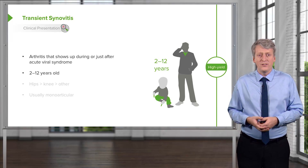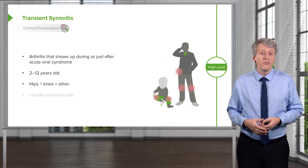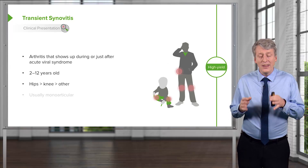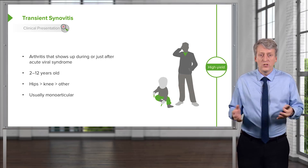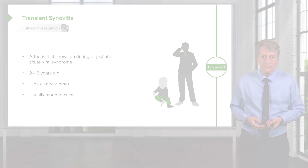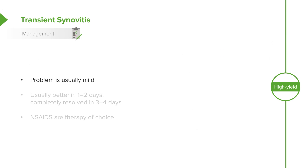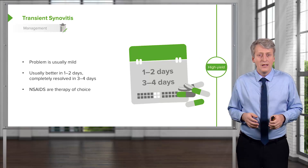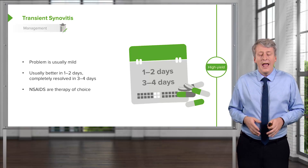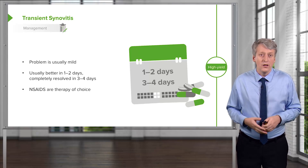The typical age for transient synovitis is between 2 and 12 years. It usually affects one, maybe two joints — hips first choice, then the knee, then something else — so this is usually monoarticular inflammation. It's typically a child showing up with a swollen knee who had a cold yesterday. The problem is usually mild; they may not be able to bear weight but often improve in one to two days, with complete resolution in three to four days. Because it's so short-lived, we treat with NSAIDs — a couple of days of naproxen or ibuprofen as needed. Transient synovitis is transient, it's an inflammation of the joint during the virus, and it's incredibly common — impossible to practice a year as a pediatrician without seeing a case.